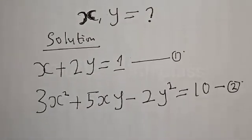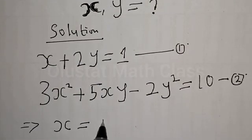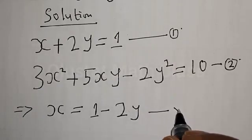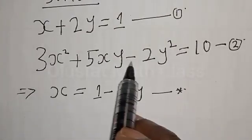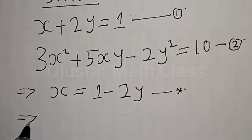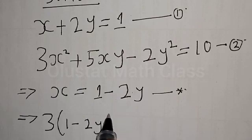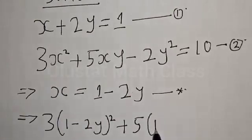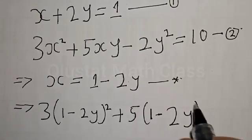From equation 1, we can make s the subject of the formula. This implies s will be equal to 1 minus 2y — let's call this equation star. Then we substitute equation star into equation 2: anywhere you see s, you put 1 minus 2y. So we have 3 times (1 minus 2y) squared plus 5 times (1 minus 2y) times y.